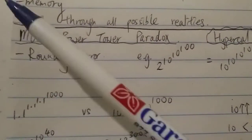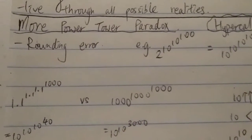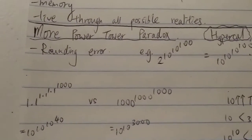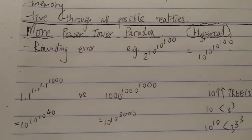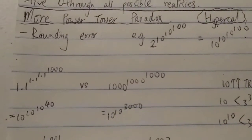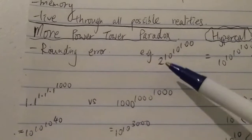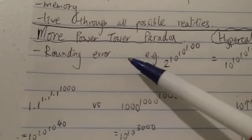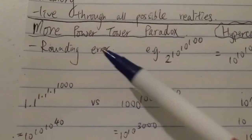Today I want to talk more about the power tower paradox. I already have at least one video on this topic — it's a pretty interesting topic about big numbers, one of my favorites. Today I want to talk more because of some recent polls I created about power towers. The reason we call this a paradox is because of something called a rounding error, so it's actually not a true paradox.